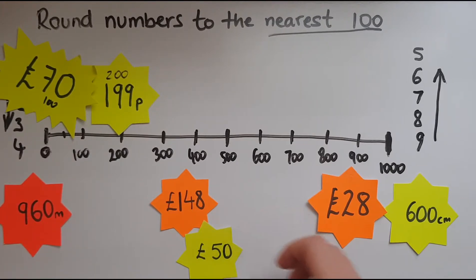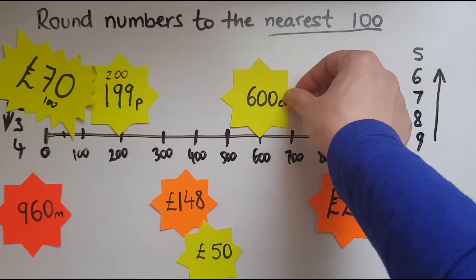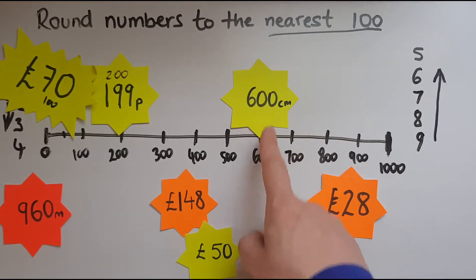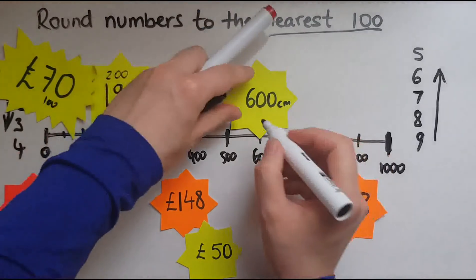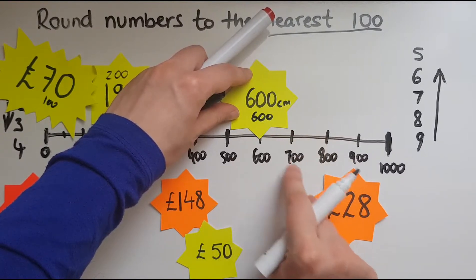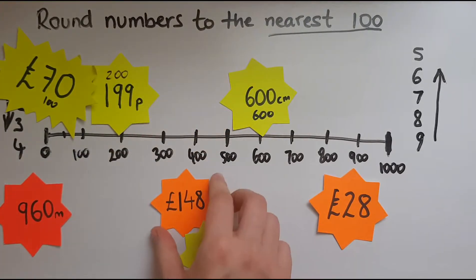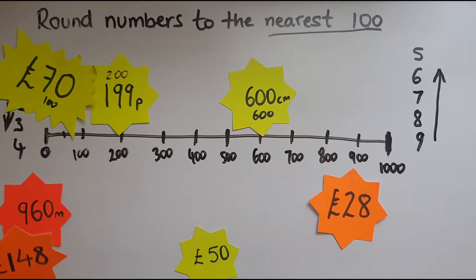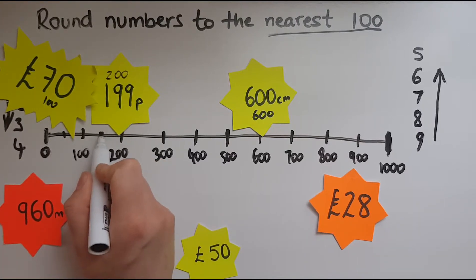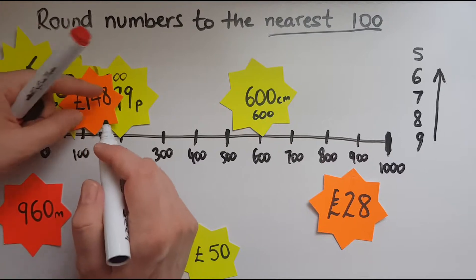Then we have 600. Where does that go? 600 is spot on the 600 mark, so that is rounded to 600. It doesn't make sense to go to 700 because it's right on 600. And then we'll take 148. So 148 is between 100 and 200. 150 is halfway through, which is the point when you round up, but 148 is less than that — just under 150 — so we'll round this to 100.